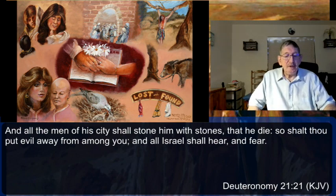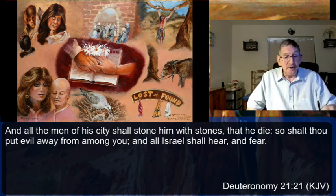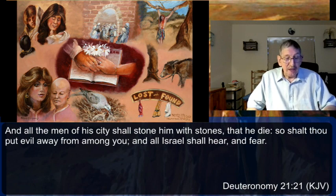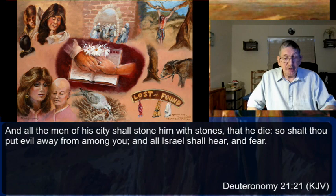This was a son past the age of accountability who set himself in determined rebellion. The parents must have done a good job raising their son, calling him to obedience and chastening him appropriately before the Lord. If they tried all avenues, they were to bring him to the elders of the city. Such a stubborn and rebellious son was to be put on trial; if determined to be chronically rebellious, the son was to be stoned to death.